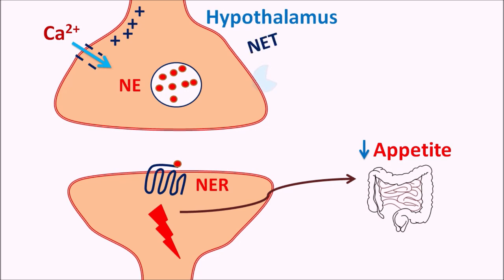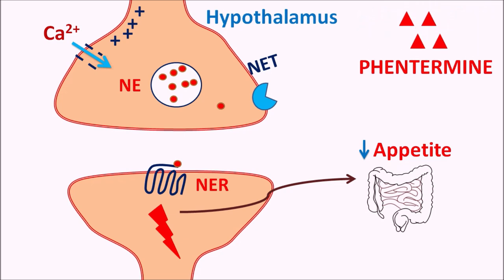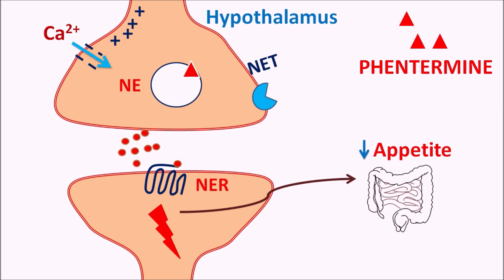The action of norepinephrine in controlling appetite depends on how long it remains in the synaptic cleft. Norepinephrine can be reuptaken into the nerve terminal by the norepinephrine transporter (NET) expressed on presynaptic neurons, which reduces its action. Phentermine can increase sympathetic activity by entering presynaptic neurons through the NET, where it acts on synaptic vesicles by displacing norepinephrine from storage vesicles. This norepinephrine is then leaked out through the same transporter, increasing norepinephrine availability in the synaptic cleft and thus increasing appetite suppression.